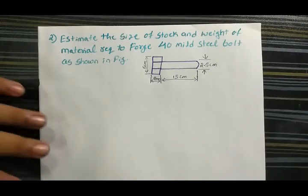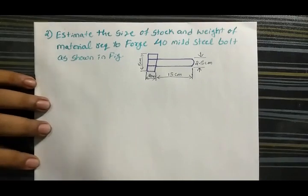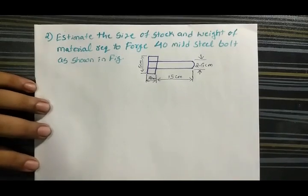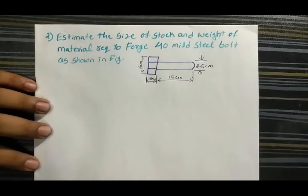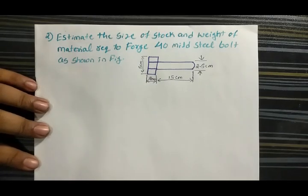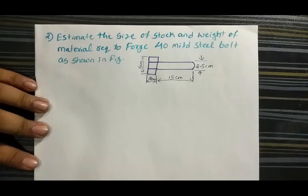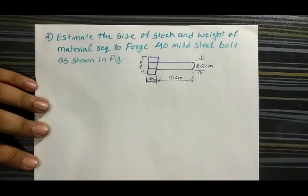Hello my dear students, once again here we are talking about the forging problem. This problem is to estimate the size of the stock and weight of the material required to forge 40 mild steel bolts as shown in the figure.